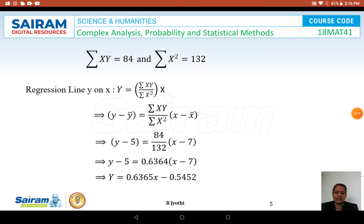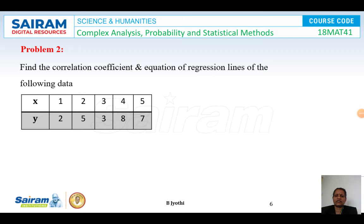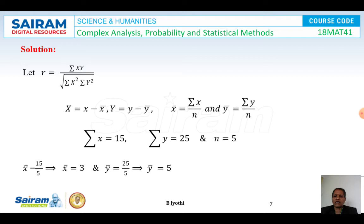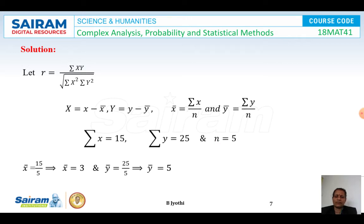Next problem: Find the correlation coefficient and equation of regression lines for the following data. The x values are 1, 2, 3, 4, 5 and y values are 2, 5, 3, 8, 7. The correlation coefficient r = sigma XY / sqrt(sigma X² · sigma Y²), where X = x − x̄ and Y = y − ȳ. Here sigma x = 15, sigma y = 25, n = 5, so x̄ = 15/5 = 3 and ȳ = 25/5 = 5.